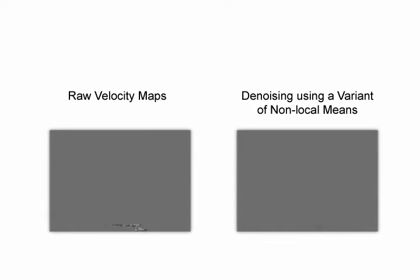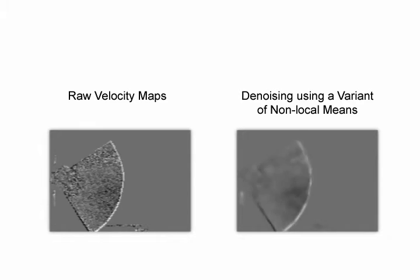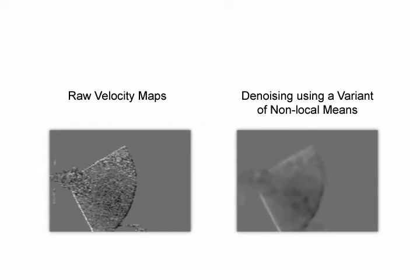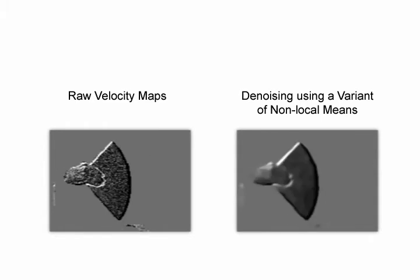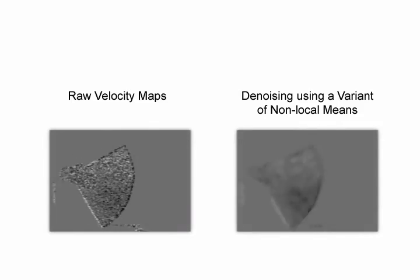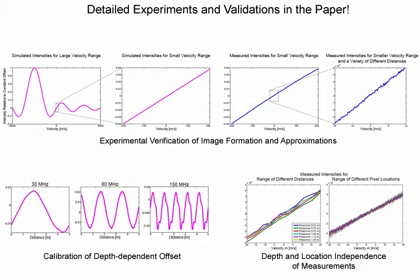The signal-to-noise ratio in our measurements is rather low and corrupted by Poisson noise. We apply a variant of non-local means denoising to all captured raw data. Please find detailed mathematical derivations and experimental validations of the proposed technique in the paper and supplement.